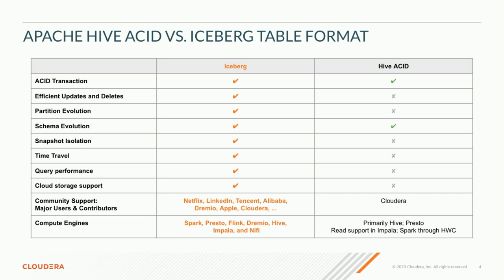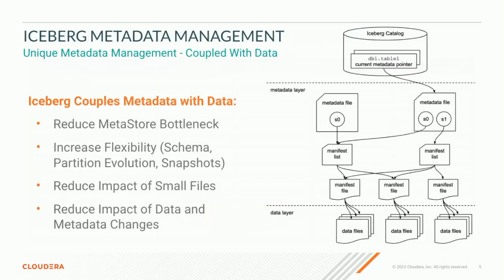That also goes for compute engines. Spark, Presto, Flink, Dremio, Hive, Impala, NiFi, and more are all supporting the Iceberg format for read and write, whereas Hive ACID has limited support — read-only with Impala and Spark through the Hive Warehouse Connector. So, back to this chart again, what we're seeing with Iceberg is an ability to reduce the metastore bottleneck — that's where we're getting our performance gains from.